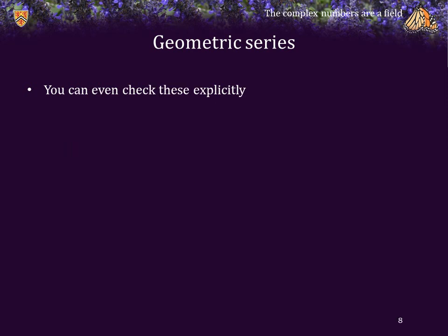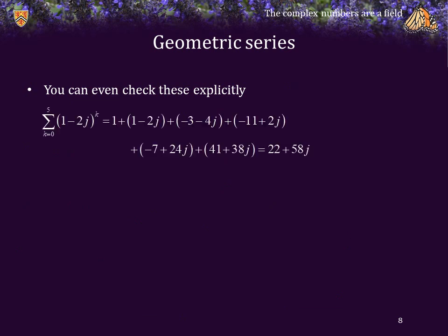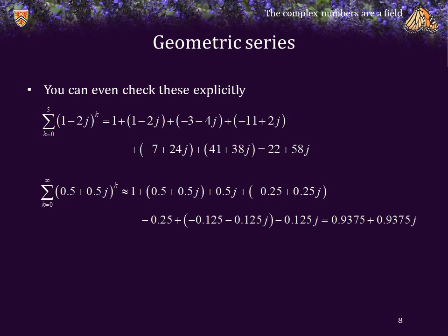You can even check these results explicitly. For the finite sum, we can just add the six terms and see that, yes, indeed, it does equal 22 plus 58j. For the infinite series, we could add the first seven terms of that series and see that it's very, very close to 1 plus j. And if you want, you could just continue adding more and more of these terms and you will see that as n goes towards infinity, the series approaches 1 plus j.